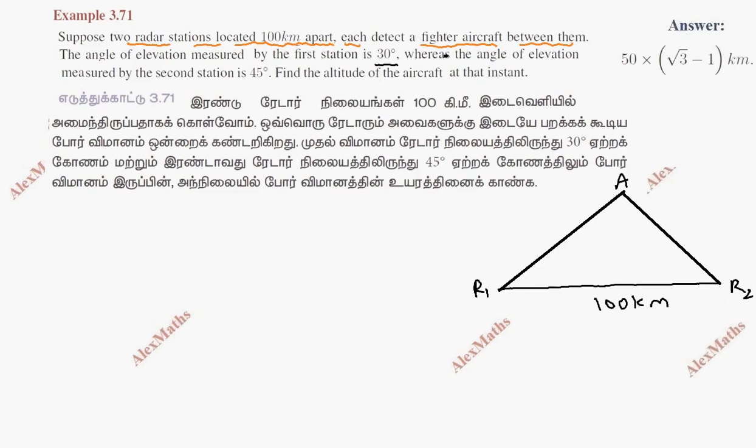The baseline is here. This is 30 degrees, this is 45 degrees. At the radar points B and C, this is the setup.